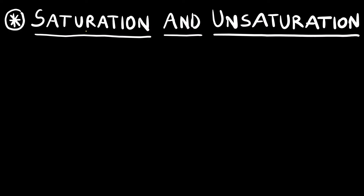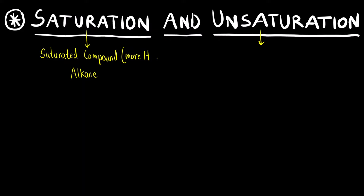First let us understand what is the meaning of saturation and unsaturation. Saturation means we are talking about saturated compounds like alkane, the simplest functional group. Saturation and unsaturation we are talking about in terms of hydrogen. A saturated compound means more hydrogen cannot be added — the compound is saturated with hydrogen. You can think of it like a saturated solution versus an unsaturated solution. In an unsaturated solution we can add more solute; similarly, unsaturation in an organic compound means we can add more hydrogen.